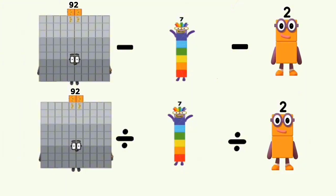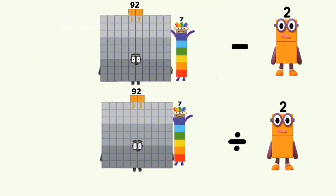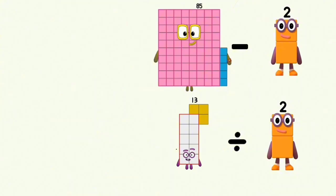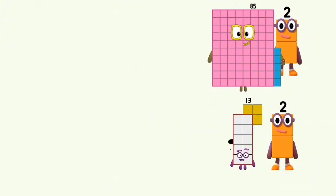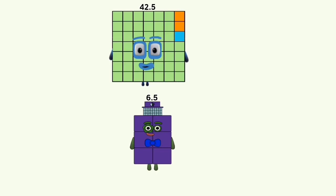92 minus and divided by 2 equals 85 and 13.8. 85 minus 2 and 13 divided by 2 equals 92.5 and 6.5.